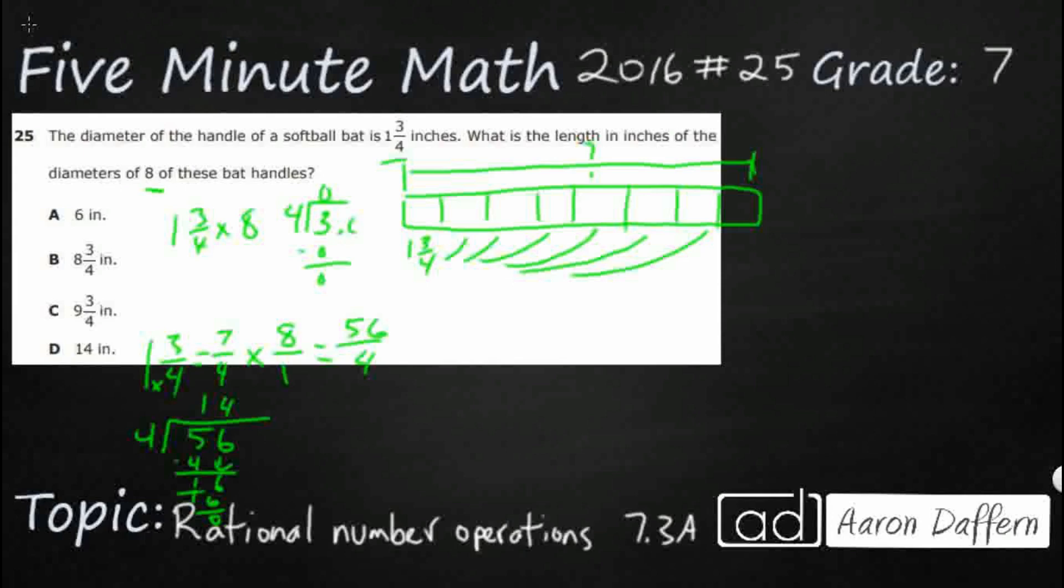But what that does is that gives us the opportunity to bring a zero down. So 4 goes into 30 seven times. That's going to be 28, and that leaves us 2. You might have known that 3/4 is 0.75. But if you ever get stuck on a fraction, just divide it up. Divide that denominator into the numerator. So 1 and 3/4, that's going to be 1.75.